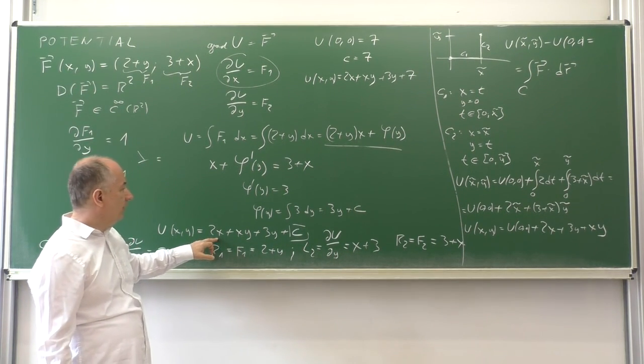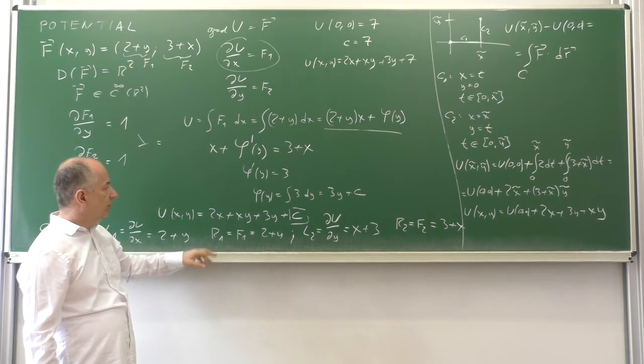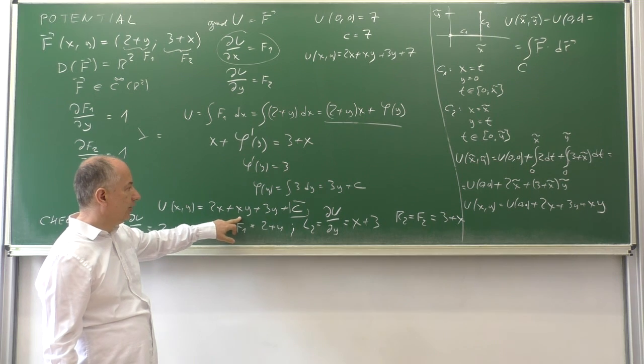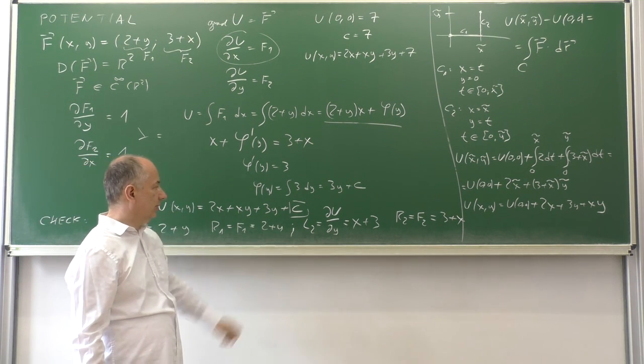If we compare with the result using the previous approach, we have exactly the same form of the potential: 2x plus xy plus 3y plus some constant.